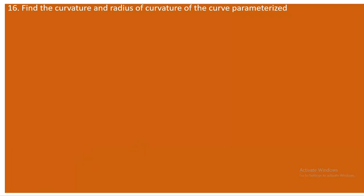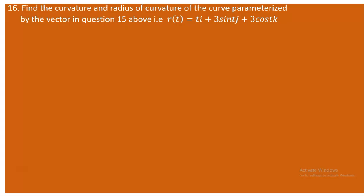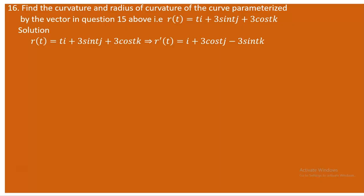Students, there comes another question: find the curvature and radius of curvature for the curve parameterized by the vector in question 15. That vector was r(t) = t·i + 3sin(t)·j + 3cos(t)·k. We are now going to find the curvature and the radius of curvature of the curve made by this vector.